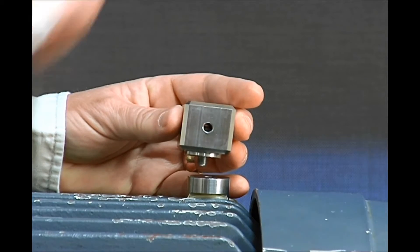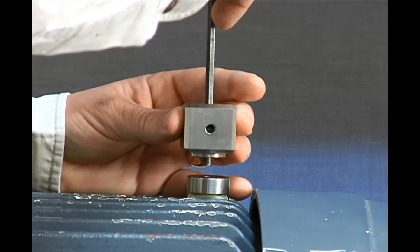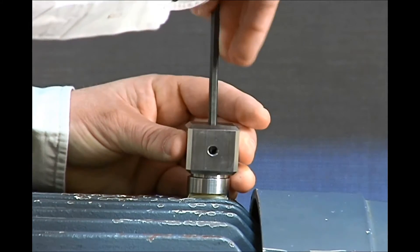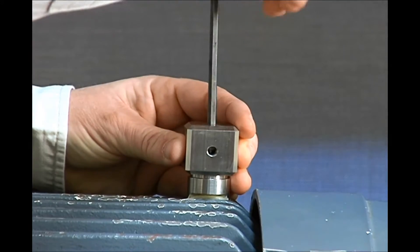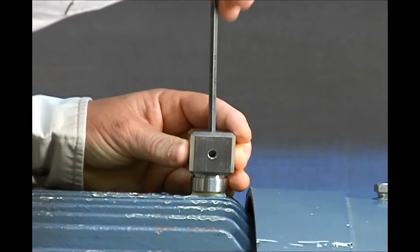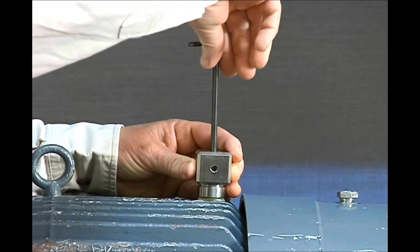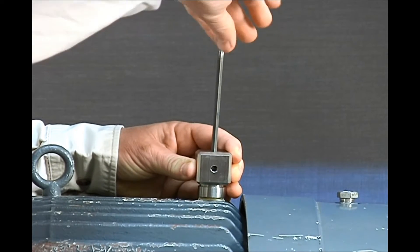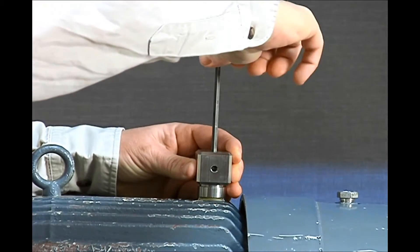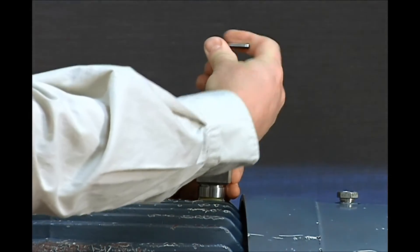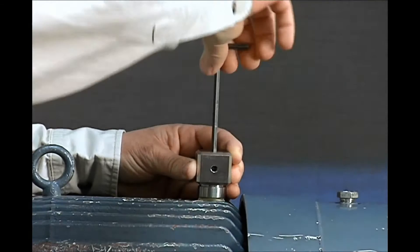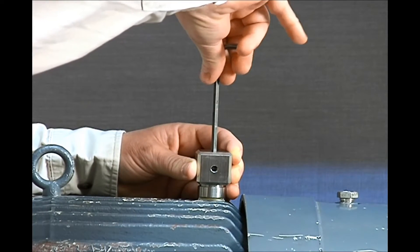To mount the mounting block, take your wrench, insert it through the top, line up the captive bolt and screw it into the mounting tab or surface. Torque should be approximately 5 to 7 foot pounds.